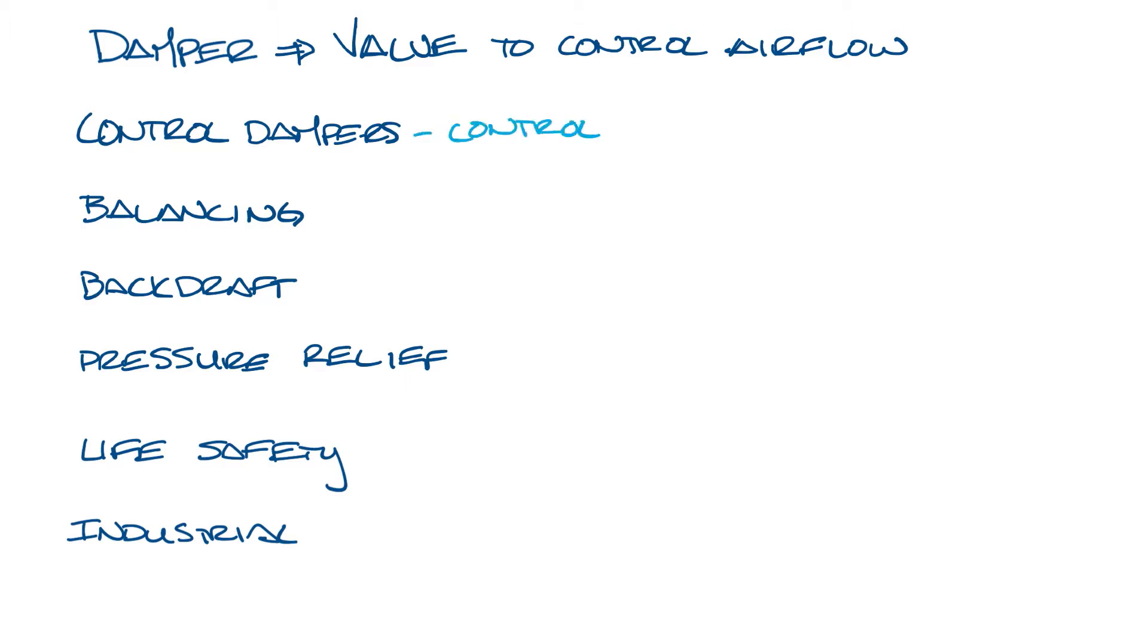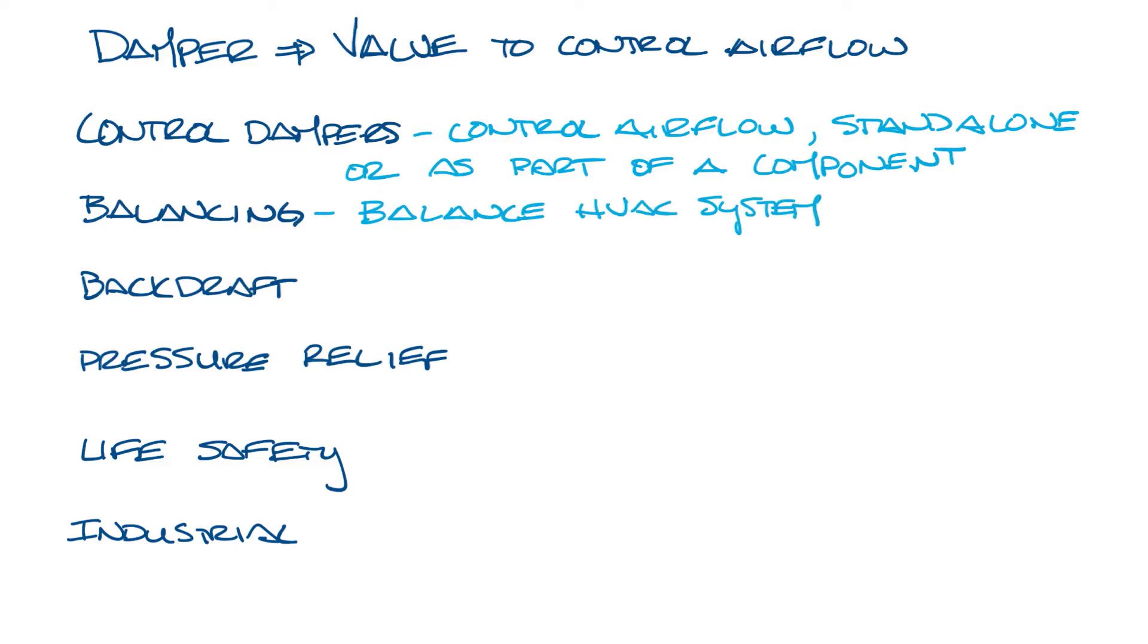Control dampers control the airflow in the HVAC system. These can be standalone in the system or they can be a component of another piece of equipment. Balancing dampers balance the airflow in the HVAC system. Balancing is essentially the process of adjusting the air to deliver the correct amount of airflow into each zone in the system.